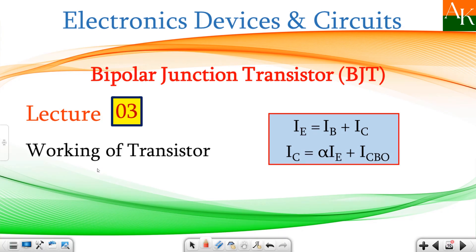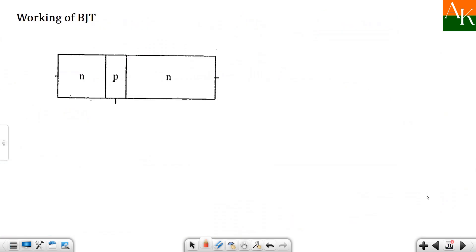Hello students. In this lecture we will see the working of a bipolar junction transistor and we will derive these two relations: IE is equal to IB plus IC, and IC is equal to alpha times IE plus ICBO. We will see the working of an NPN transistor.